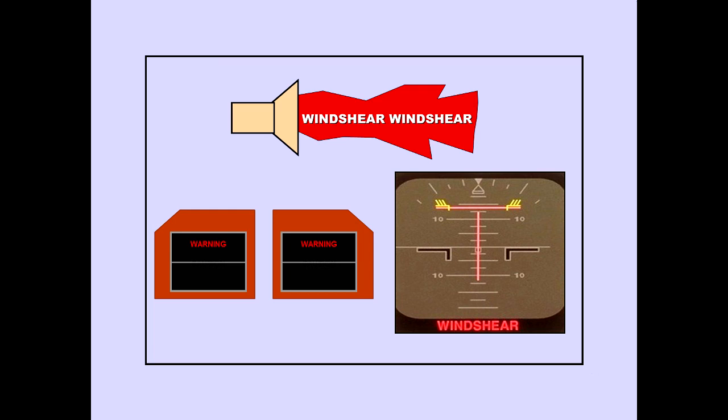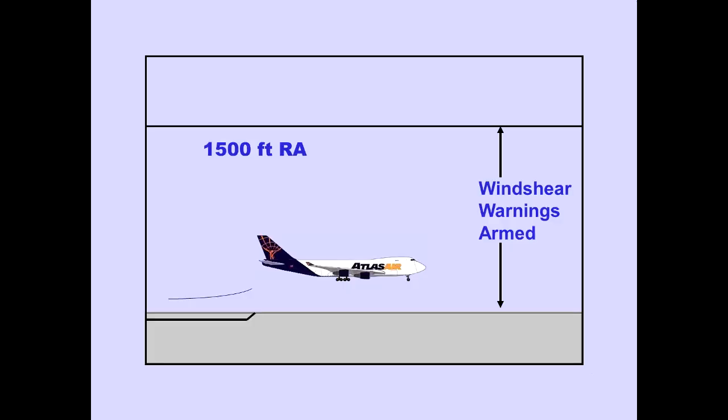The aural windshear warning, Windshear, Windshear, Windshear, indicates windshear conditions that approach the limiting performance capabilities. Windshear is also displayed on the PFD. These warnings will be discussed in more detail in the Ground Proximity Warning System module. The Windshear Warning System arms on airplane rotation and remains armed below 1,500 feet radio altitude.